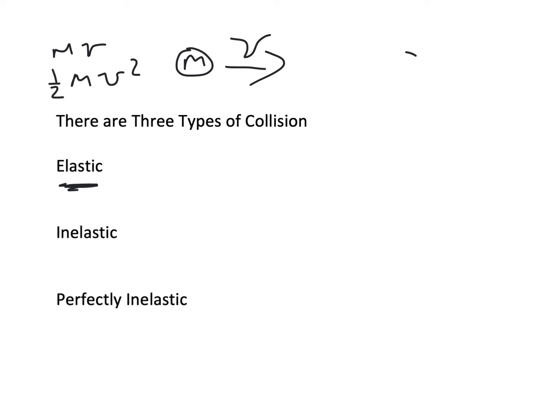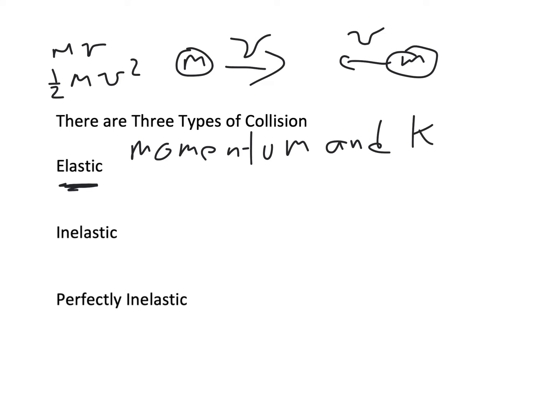You have another mass over here moving with a velocity in the same direction. Those two masses are going to collide, and the momentum and energy are going to transfer from one ball to another. For an elastic collision, the momentum is conserved and the kinetic energy is conserved — in other words, they are both conserved.